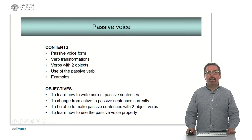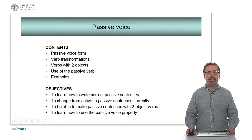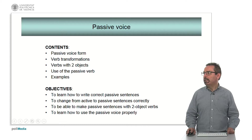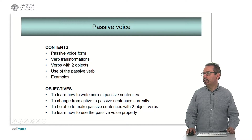We will see the form, how to form the passive voice, to see some verb transformations. We will focus also on the transformation into the passive of constructions with verbs with two objects, and also we'll have a look at the use of the passive verbs and we will see some examples of passive and active sentences. The objectives are to learn how to write correct passive sentences, to change sentences from passive into active and vice versa correctly, and to be able to make passive sentences with specific two-object verb sentences.